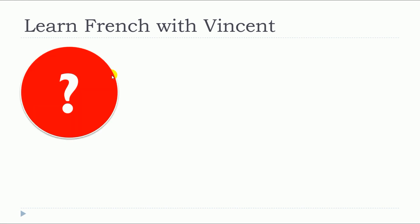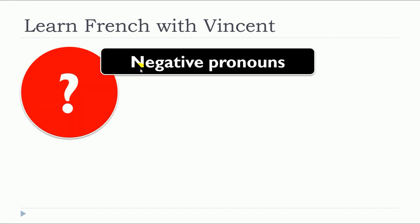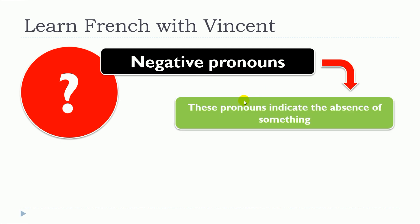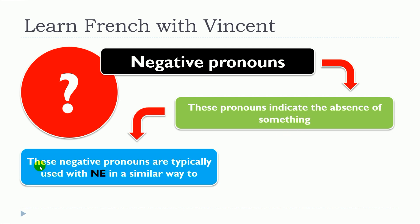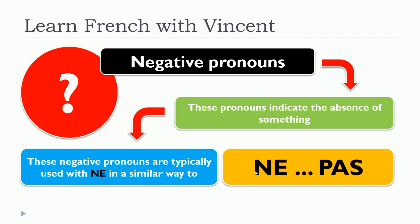The first thing that we need to define is the negative pronouns. These pronouns indicate the absence of something. These negative pronouns are typically used with NE in a similar way to NE PAS. So remember, this is the negative form NE PAS. Instead of PAS, we will use the negative pronouns — so we will have NE and then your negative pronoun.